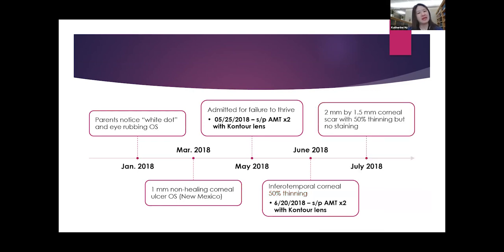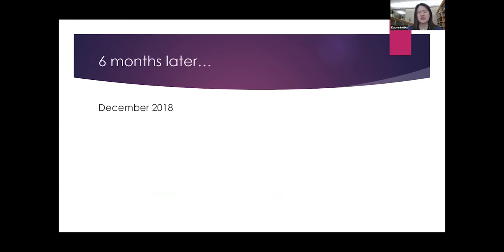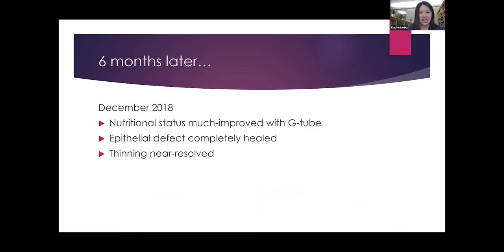He underwent an EUA and we did elect again to perform the double layered AMT technique and also the contour lens. About one month later after the second AMT, he still had a pretty, the size of the ulcer didn't really go down and he still had pretty significant thinning. But he had started to re-epithelialize and kind of become more of a scar. He was actually supposed to follow up one month afterwards but was somewhat lost to follow up. About six months later he came back for follow-up in December 2018 and miraculously, the epithelial defect had completely healed and the thinning had near resolved. At this time he was just using artificial tears for lubrication, but what had really changed in terms of his systemic health was that he had significant improvement of his nutrition status and caloric intake with a G tube and supplementary enteral feeds.